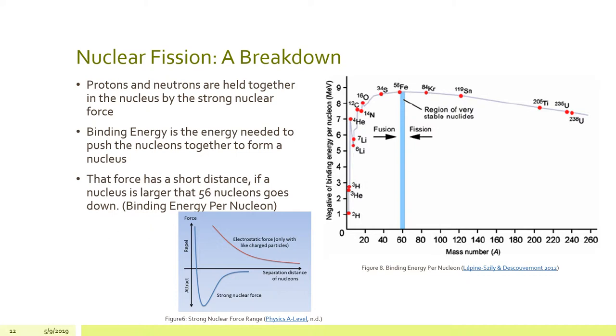And that nuclear strong force has a very short distance. So short, in fact, that if a nucleus is larger than 56 nucleons, which corresponds to iron here on the graph on the right, that the nucleus is so large that the strong nuclear force from every atom is not acting on every other atom. That is to say, two nucleons on the opposite side of the nucleus are not feeling the nuclear strong force from the farthest one away from them. And that results in a reduction in the average number of binding energy per nucleon, and results in an overall less stable atom.